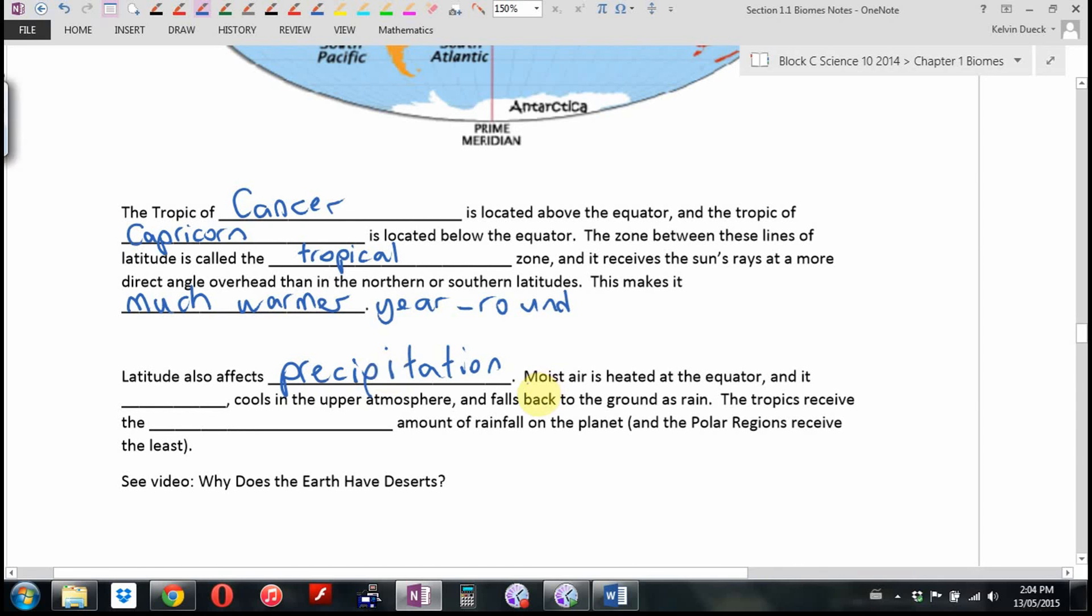Why? Well, moist air is heated at the equator. What happens when you heat air? Hot air what? It rises. But when it rises, it cools off in the upper atmosphere. And in the same way, when you go on a window and you see moisture gather because the hot air from your body has cooled off when it hit the window, the hot air at the equator rises, cools off, condenses, and falls back to the ground as rain. So the tropics receive by far the greatest amount of rainfall on the planet. And the polar regions receive the least.